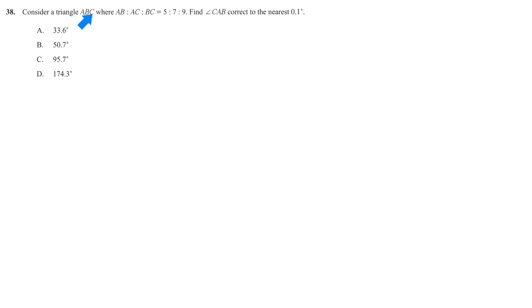The question says consider a triangle, and then AB to AC to BC is this ratio. Aiyah, where is the triangle? I have no idea what it's talking about.